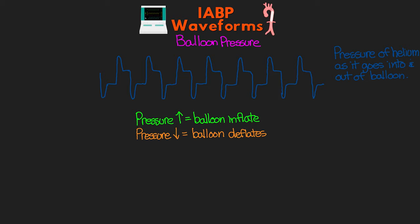The basic cycle for the balloon goes like this: the helium pressure increases — shown by the increase in the waveform — causing the balloon to inflate. Once the proper volume of helium is given, you'll see the pressure equalize, which is a little drop from the max pressure. Then the balloon pump keeps the balloon inflated, which is the plateau we see. Then at the right time, the balloon deflates — that's the next drop off — which occurs right before the next heartbeat. The proper balloon pressure waveform should really resemble a chair. I think of it as resting the heart, so we want a nice chair to rest on.